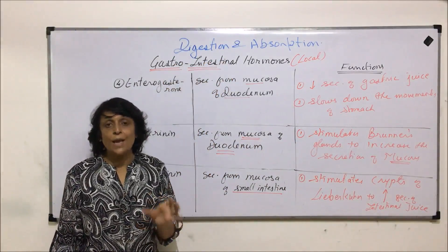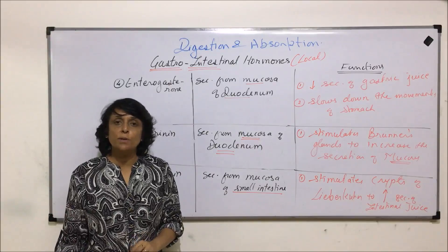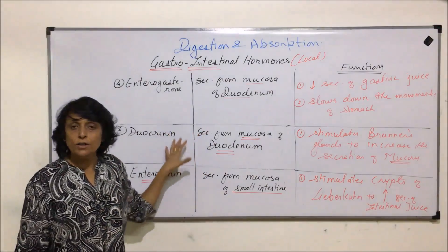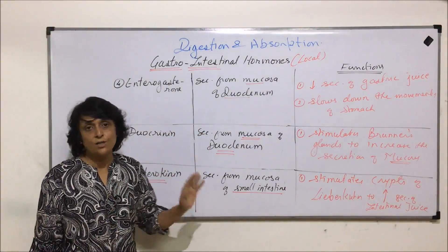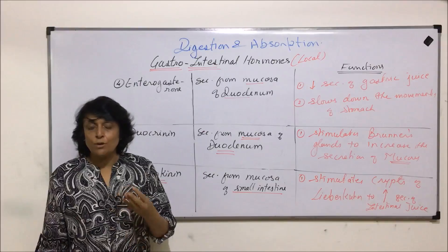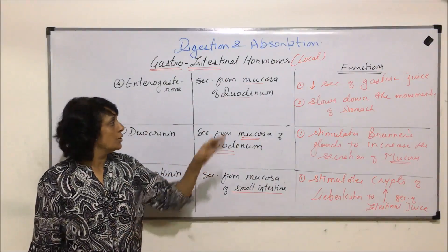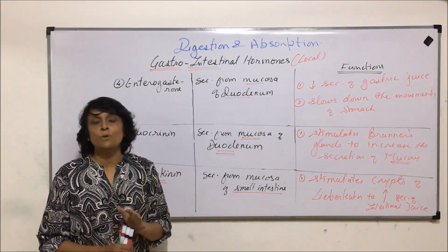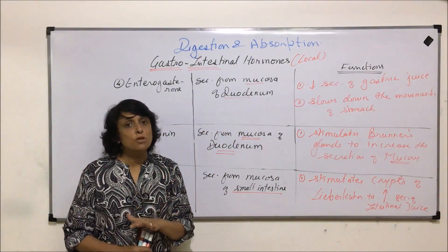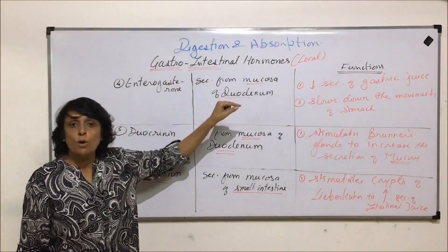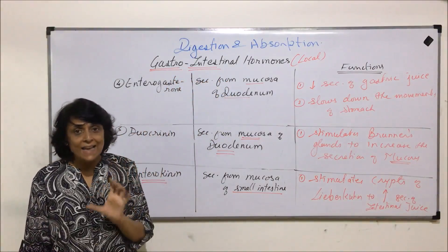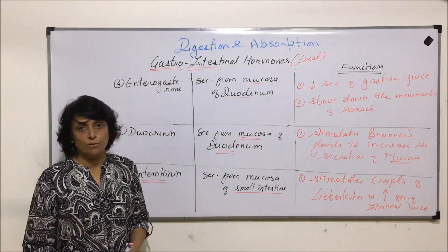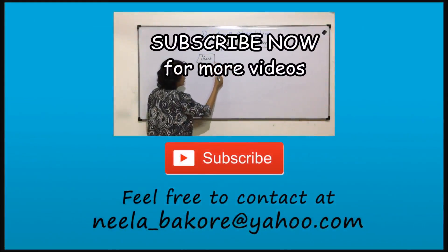So these local hormones are secreted only in the stomach and intestine region, and they are responsible for regulating the functions associated with these organs and the process of digestion — such as enzyme production, mucus production, or contraction of the gall bladder — so that the digestion process can be performed smoothly. That is why we call them local hormones, and since they are area-specific, they are also called gastrointestinal hormones.